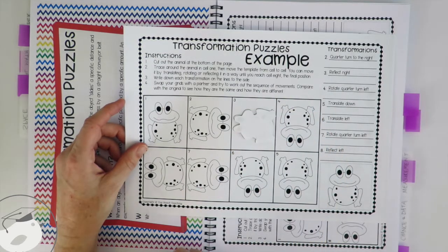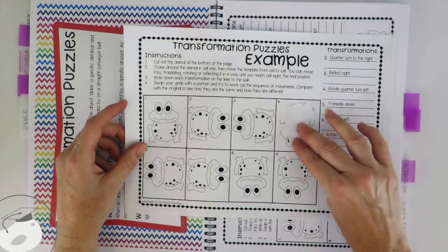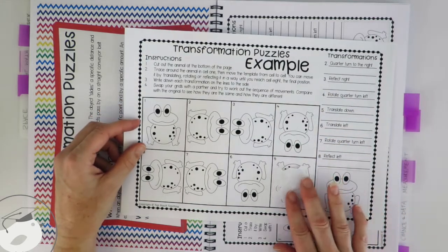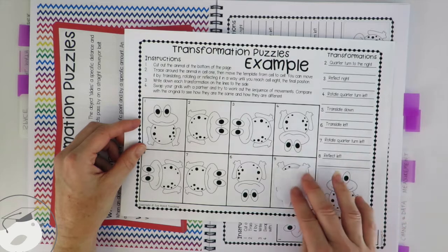Then we're going to do a rotate a quarter turn to the left and again. So each time you're moving it along and then your students write the instructions down the right hand side.